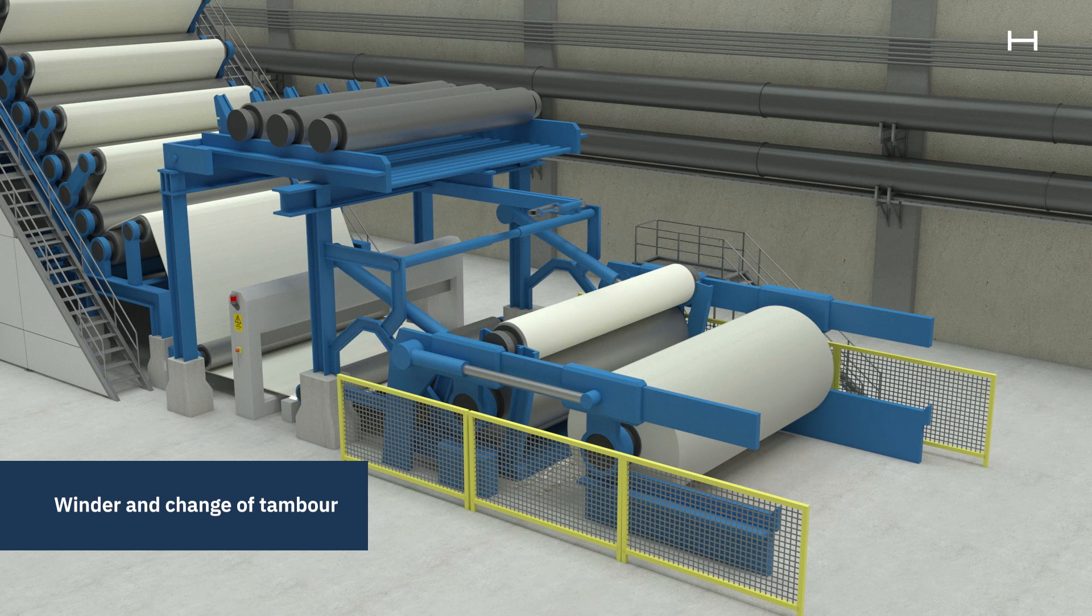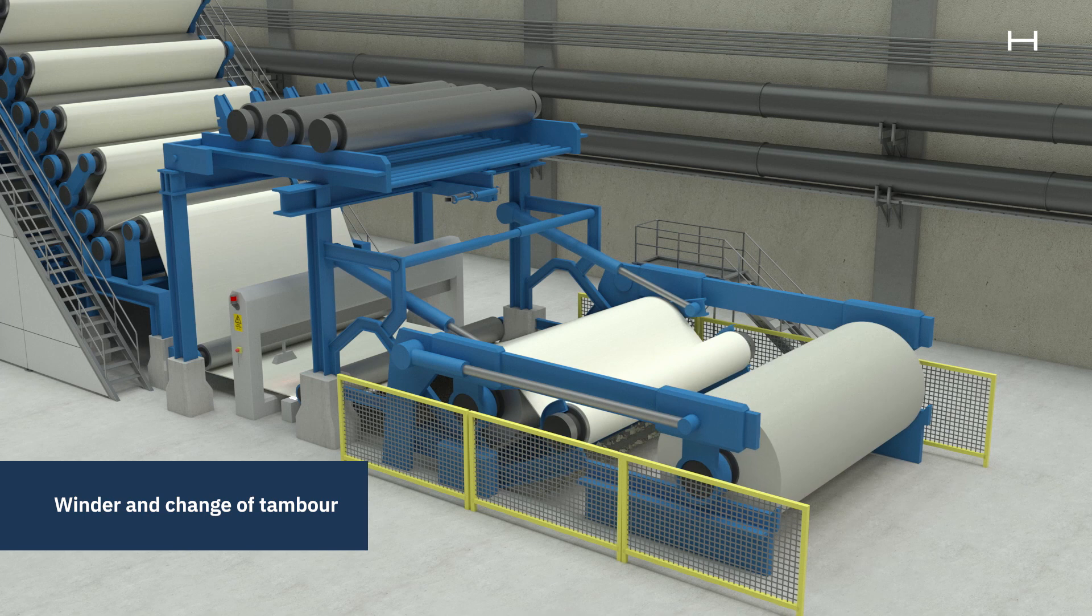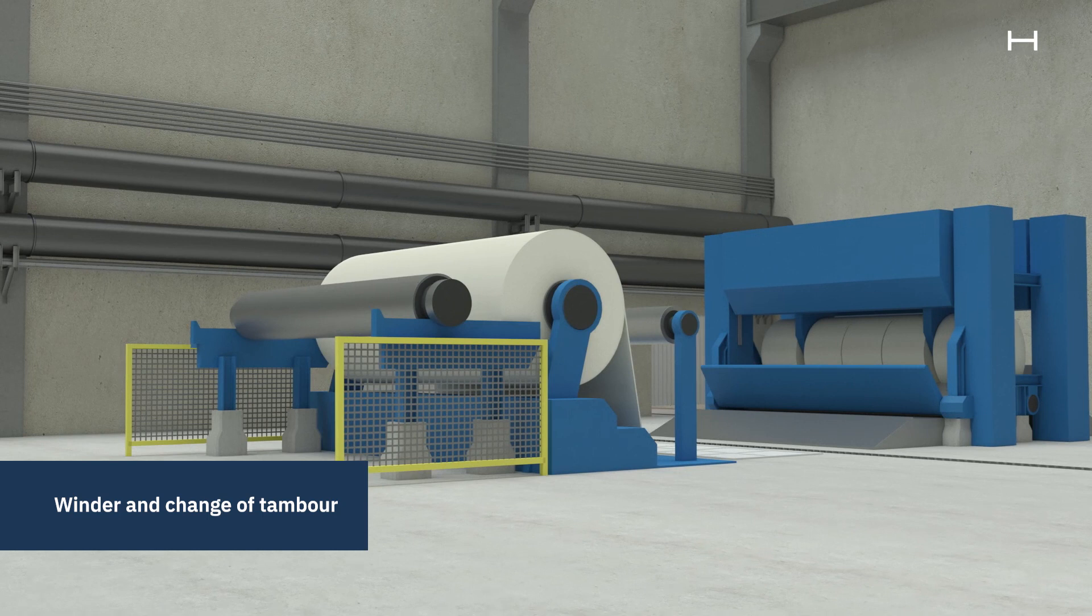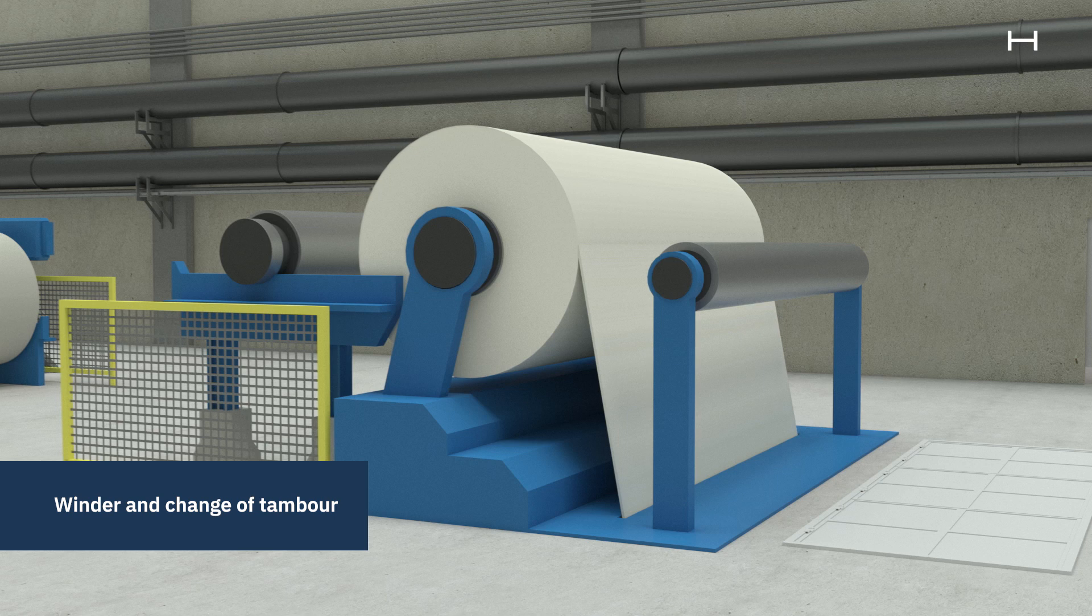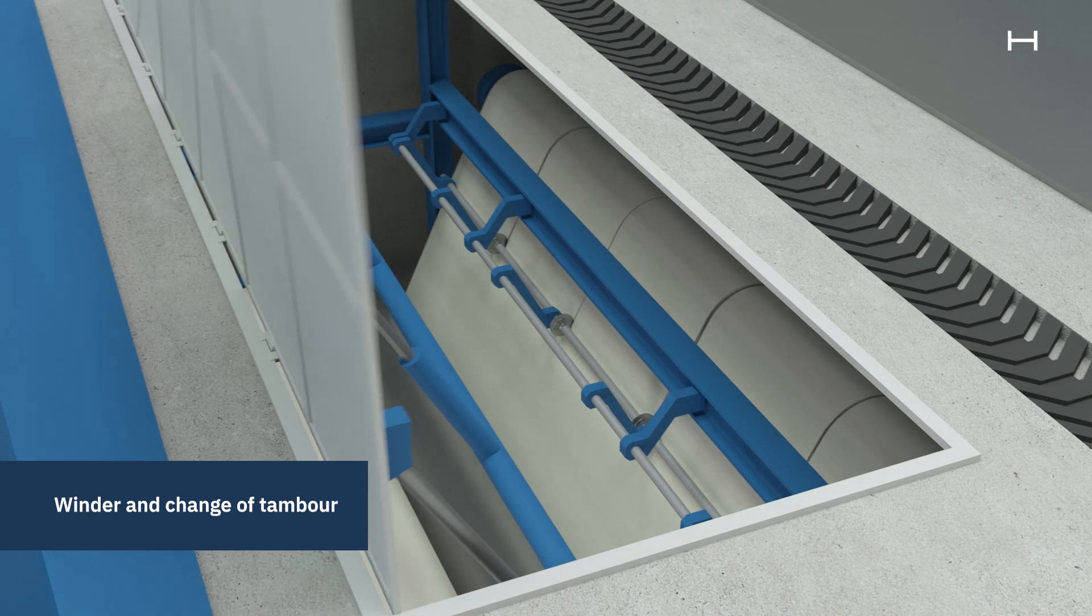The paper is wound onto a jumbo reel, a so-called tambour, where up to 100,000 meters of paper can be wound and weighs about 40 tonnes. It takes about one hour to produce a full tambour of paper, but it only takes 15 seconds to get the paper through the paper machine from the head box to the jumbo reel.